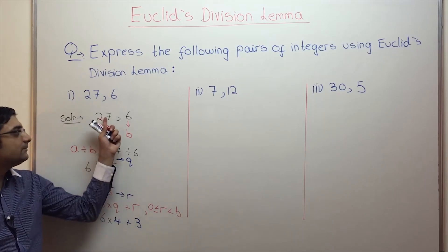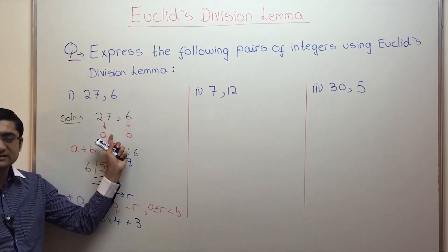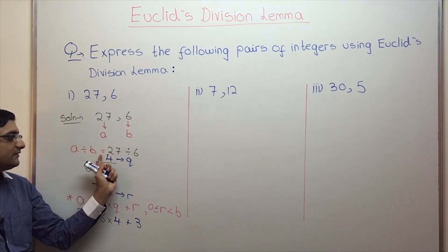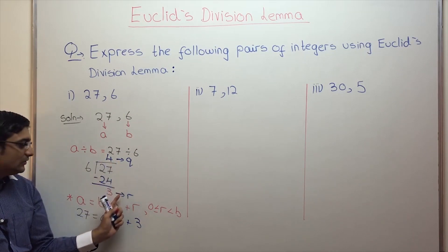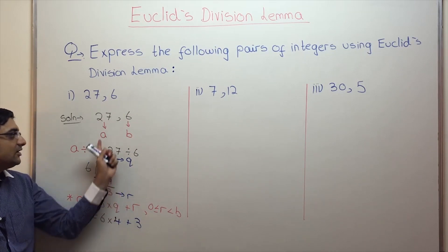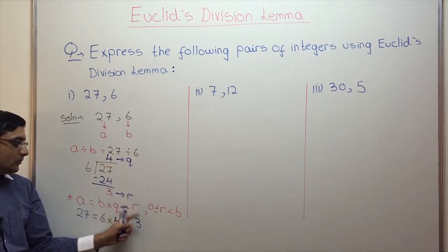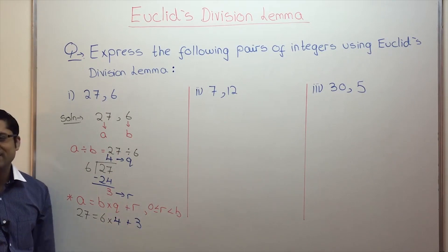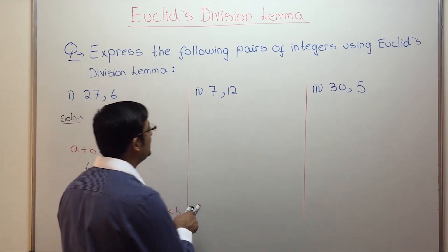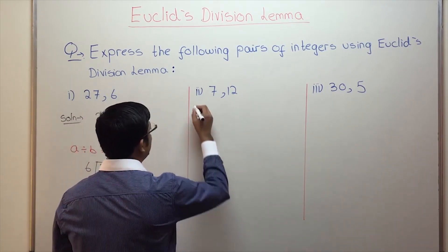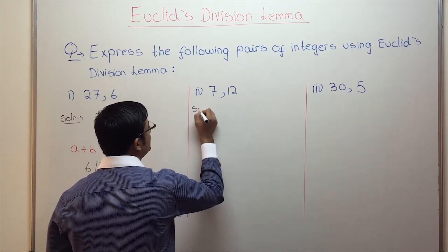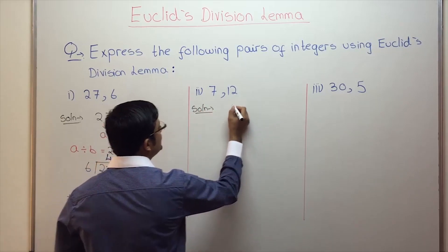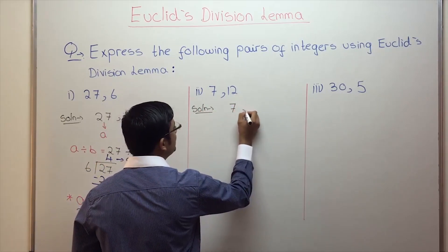Let me repeat once again. Label the first integer as A, second as B. Do A divided by B. Label the quotient as Q, remainder as R. So you have A, B, Q, R. State Euclid's division lemma and plug in the values. Now for the next example, copy your numbers as they are: 7 and 12.